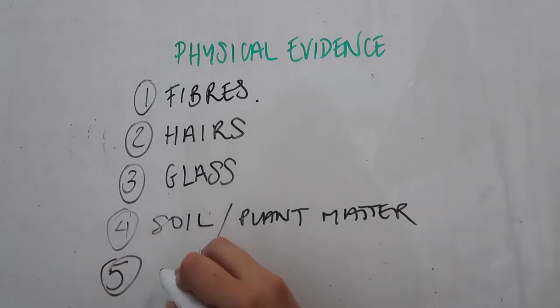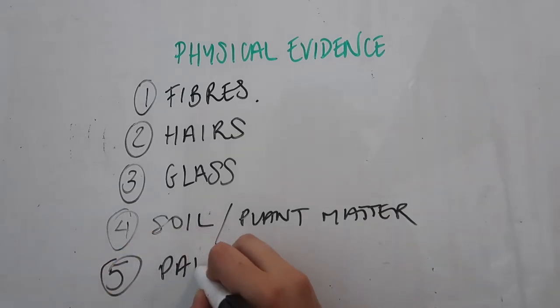Paint evidence refers to little dislodged dry flakes of paint — the sort of thing that would come off a door or a car. These paint flakes can be matched in the same way as fibres and glass are to a control sample, but they can also create investigative leads.